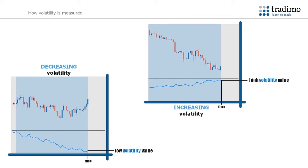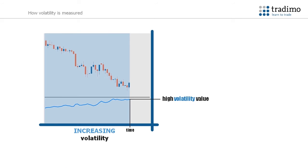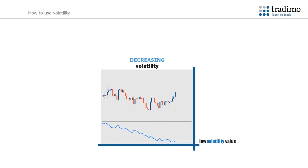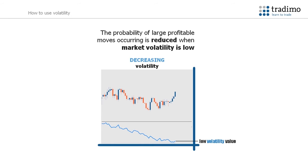It is important to note that the ATR indicator does not give the direction of the trend, simply whether the volatility of that asset is increasing or decreasing. When the ATR line goes up, the volatility has gone up. When volatility is low and decreasing, the probability of large profitable moves occurring is greatly reduced. The trader should avoid this type of market environment.